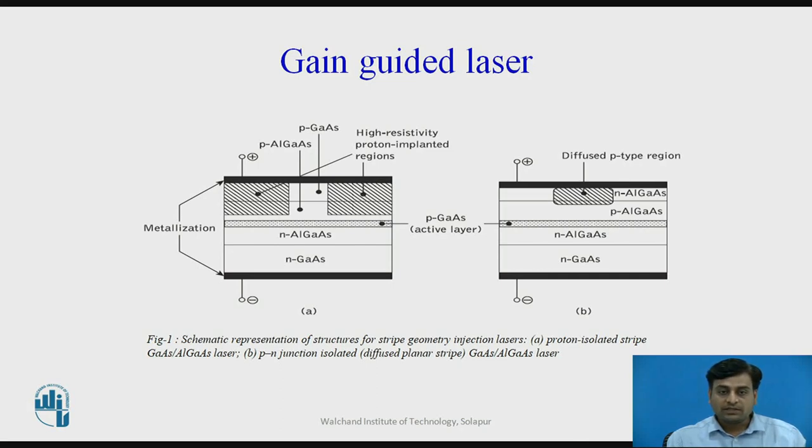Figure 1b shows p-n junction isolation which involves a selective diffusion through n-type surface region in order to reach the p-type layers.